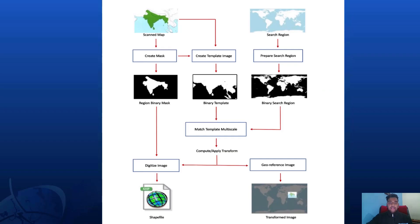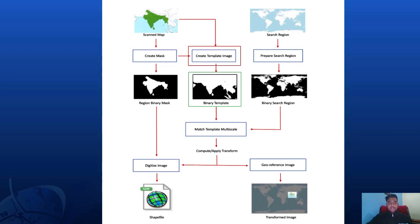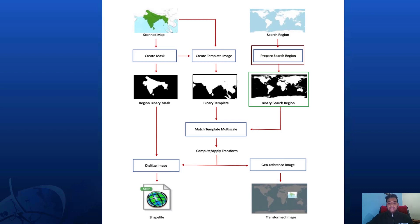We have divided the entire approach into 6 different steps. The very first step is Create Mask, where we extract the color region from the scanned map and generate what we call a region binary mask. The second step is Create Template Image, where we extract the land region from the scanned map — the land region consists of the colored region and the land area. The next step is to Prepare the Search Region, which is the region on which we will find the binary template. This search region should also contain the extent we will use for geo-referencing and digitizing the image in further steps.